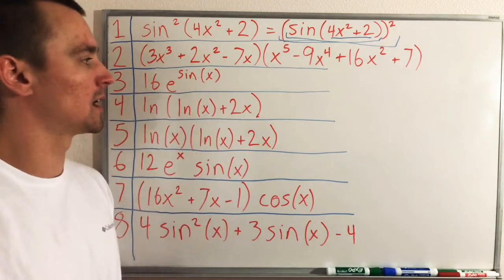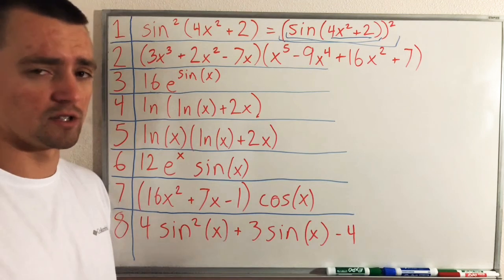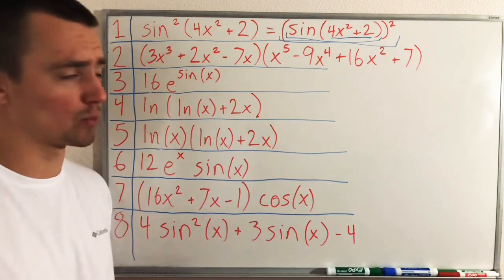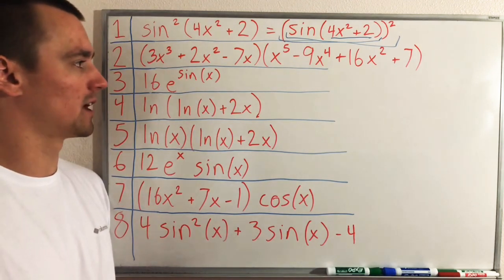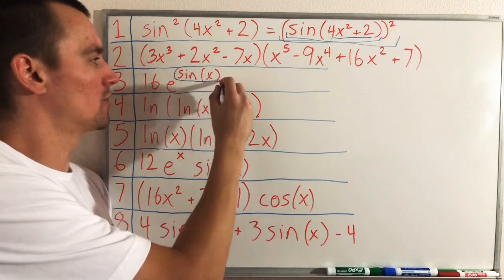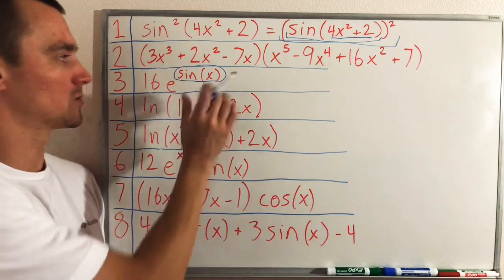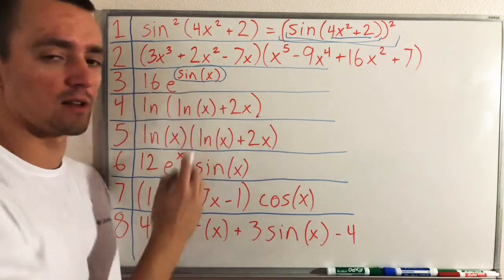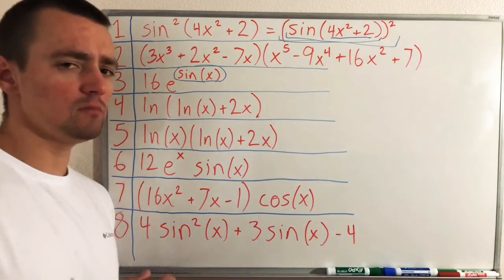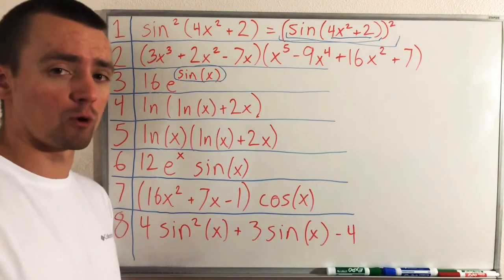Example three is 16e^(sin x). Having a constant multiplied by something doesn't mean you want to use product rule — you don't need to call one function 16 and the other e^(sin x). Instead, think about sine of x being trapped in the exponent as our inner function, and 16e^x as our outer function. So we're basically plugging sine of x into 16e^x, giving us a composite function — therefore we use chain rule here.